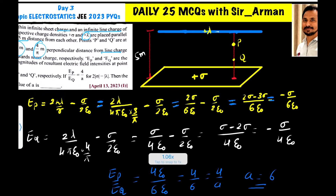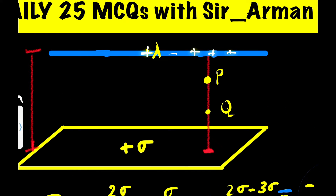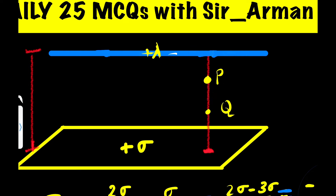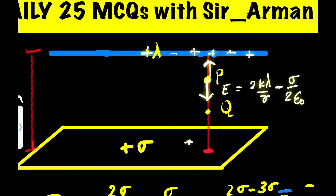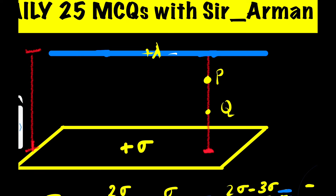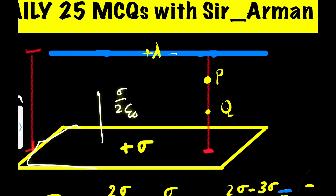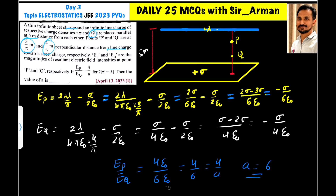For point P, zooming in: this positive line charge will repel and produce an electric field in the downward direction, given by 2k lambda by R, where R is 3 by pi for point P. The positive plate is also positive, so it will produce an electric field in the opposite direction. So the net electric field is 2k lambda by R minus sigma by 2 epsilon naught, since both fields are in opposite directions. The electric field due to a plane sheet is sigma by 2 epsilon naught, which is independent of distance.